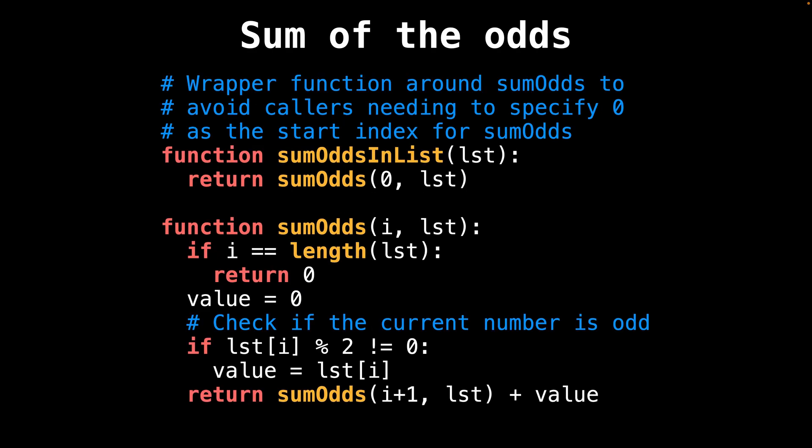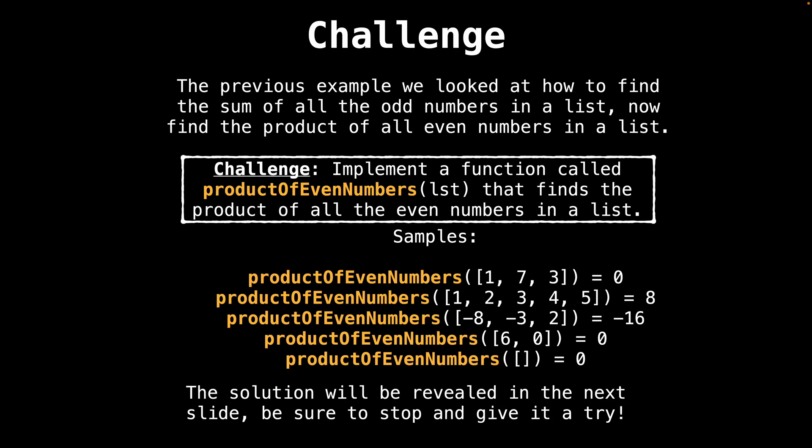In this slide I added a new wrapper function called sum_odds_in_list which takes a list as input. In a real programming language you would make the sum_odds function private or internal only, and let sum_odds_in_list be the public-facing function. It's pretty typical in recursive programming to have one public user-facing function that calls another function that does the actual work. Calling sum_odds_in_list allows us to call sum_odds but starting the recursion at index zero, ensuring that the whole list gets looped over.